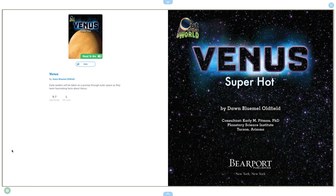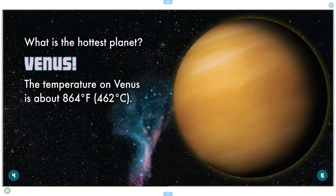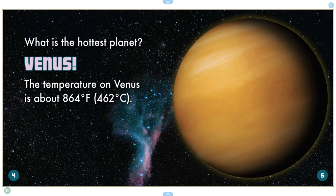Venus, Superhot by Don Blumell Oldfield. What is the hottest planet? Venus! The temperature on Venus is about 864 degrees Fahrenheit, 462 degrees Celsius.